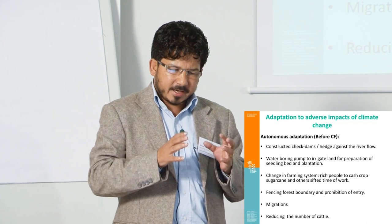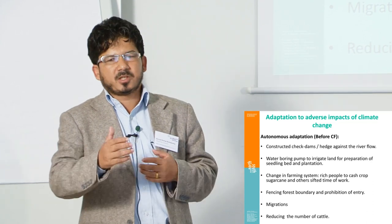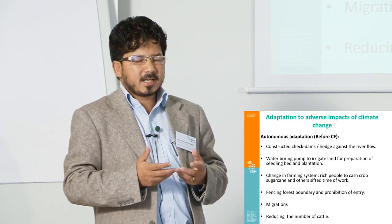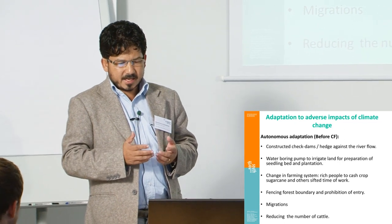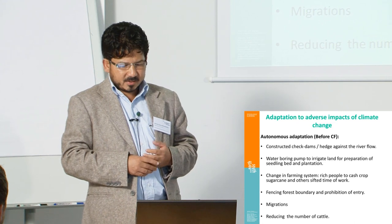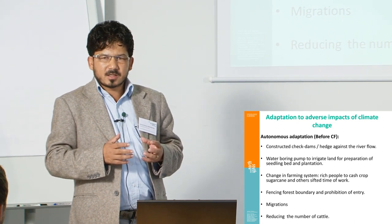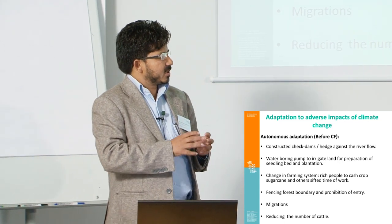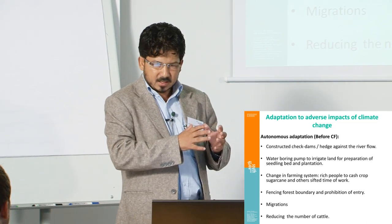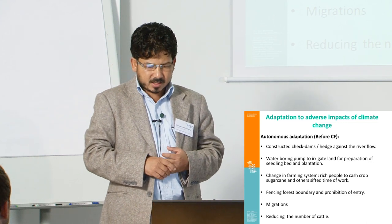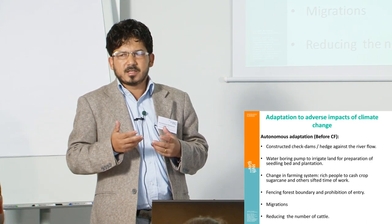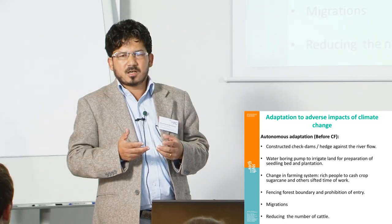Communities have been adapting to the impacts of climate change for the last 25 years or more. We can describe adaptation practices as autonomous adaptation before community forestry practice and planned adaptation after. Before community forestry, they particularly focused on technological aspects of adaptation, like construction of check dams against river flow, water boring pumps to irrigate land, preparation of seedling beds and plantations, and changes in farming systems. Particularly, rich people changed from traditional subsistence farming to cash crops like sugarcane, while poor people shifted the timing of farming, fenced forest boundaries, and prohibited entry. They also reduced the number of cattle by around 50% as forests decreased.